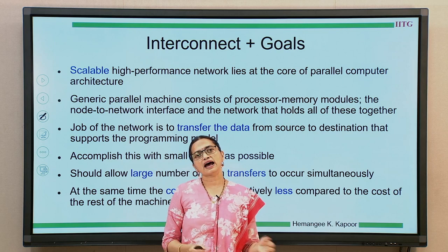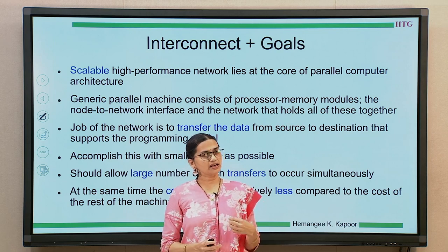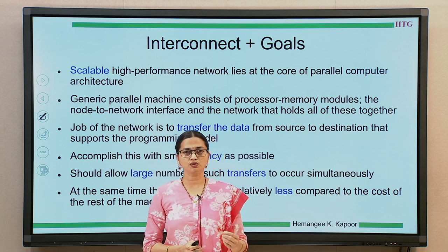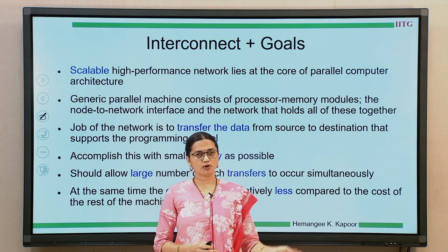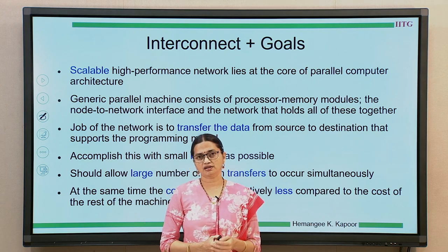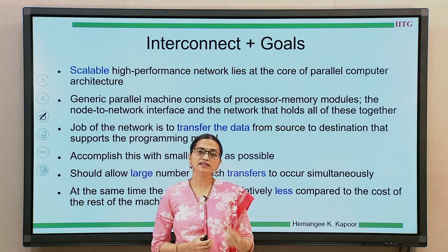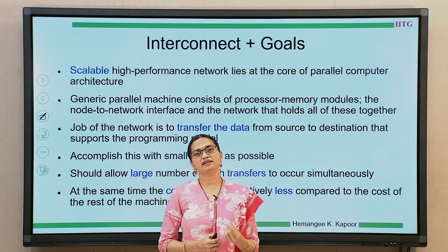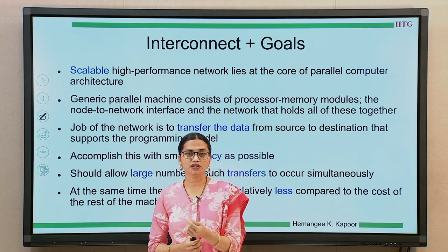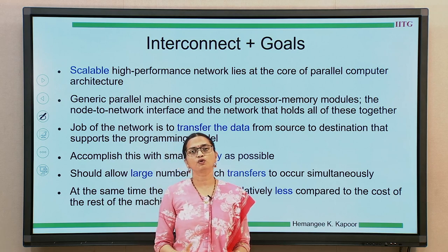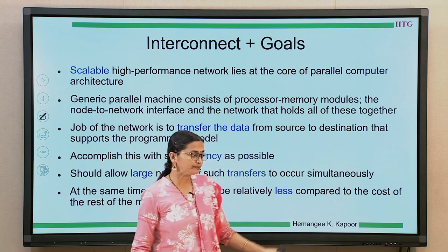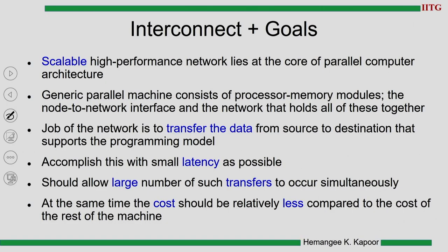At the same time, because it is a parallel architecture setup, there are multiple processing nodes wanting to connect to other processing nodes. So we want more parallel connections possible. Can the network give us multiple parallel connections, each with the best latency possible? That should be the goal of a scalable interconnect. So we need a high-performance scalable network for our parallel architecture to work at its best performance.